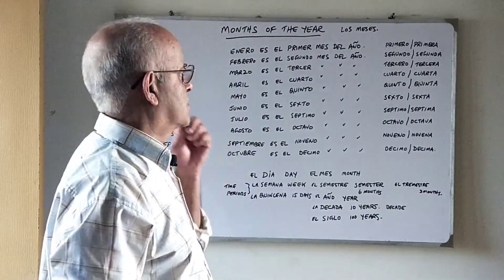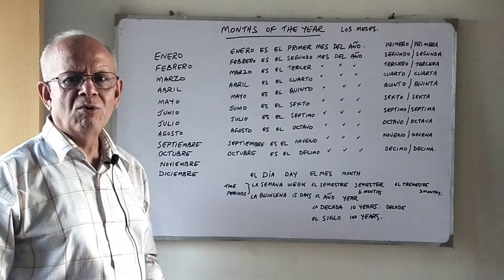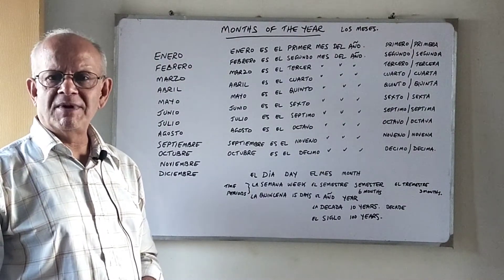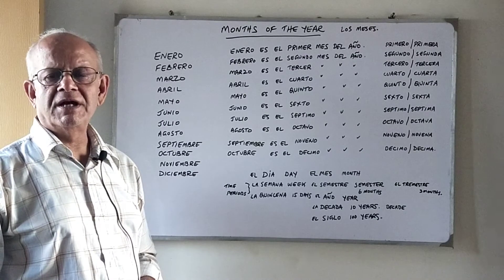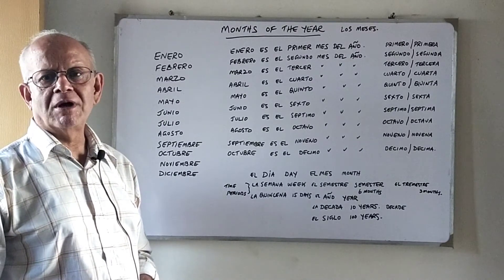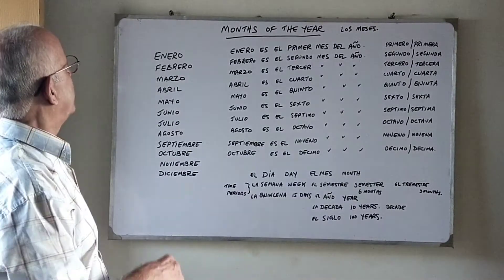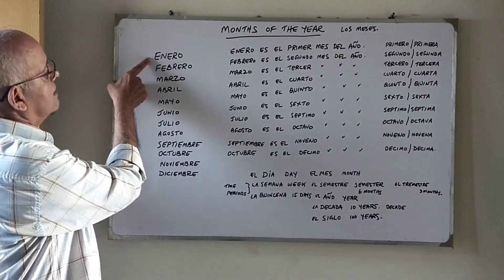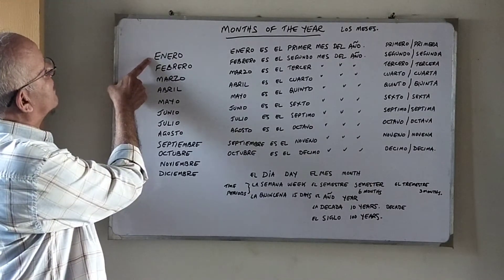The months of the year in Spanish. Most of the months in Spanish are very similar to our English equivalent. Pay attention and please learn how to pronounce these months. So repeat with me. Enero, Enero — January.